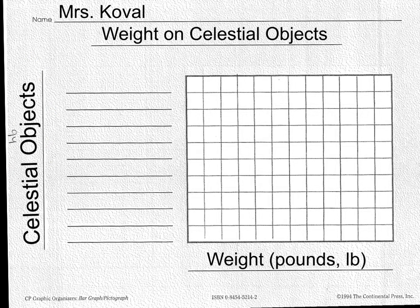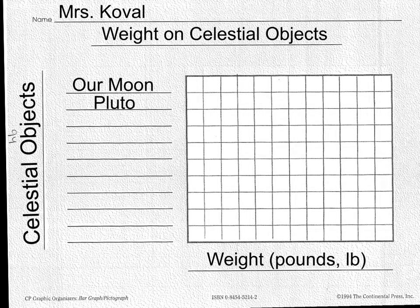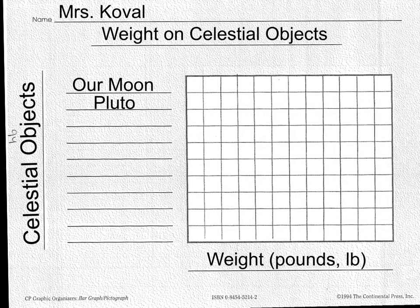What I need you to do is put all eight planets on the first eight lines, going in order from closest to the sun to farthest from the sun. Spelling counts, so think about where you could find the spelling of these objects — hint, hint, somewhere in your workbook. The last two objects are Pluto and then our moon. Spelling does count.